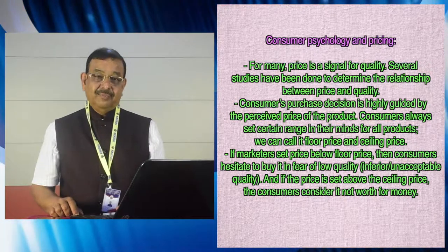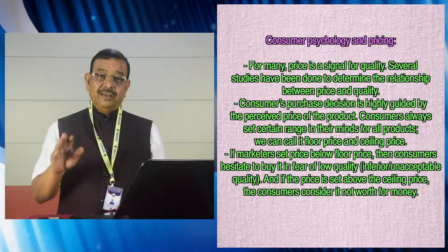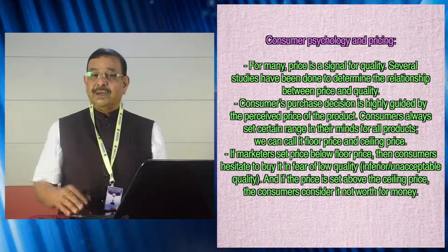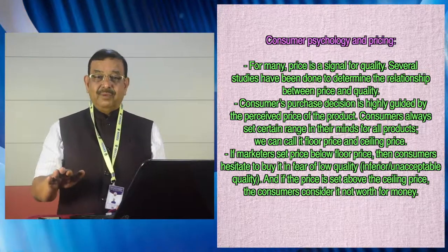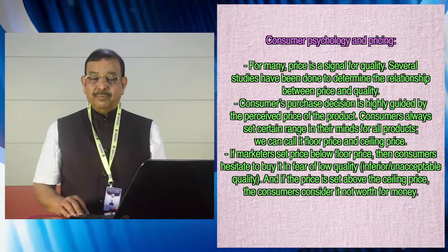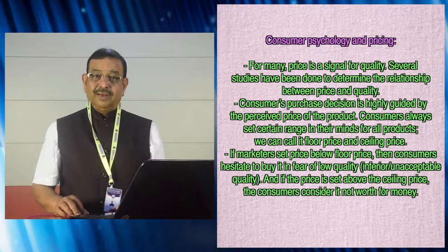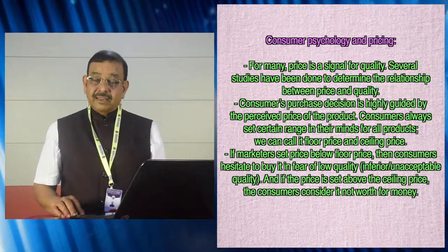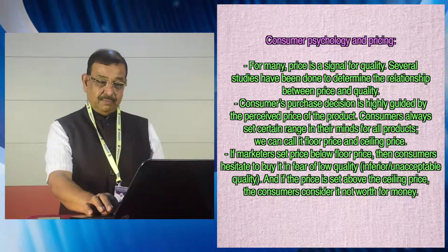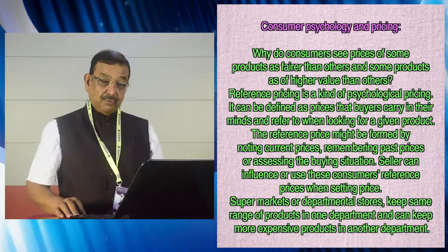If a product is priced above the ceiling price, in terms of affordability the consumer will withdraw, feeling it is beyond their means. So there is an acceptable price range between floor and ceiling within which consumers decide what to buy. Consumers set a mental price limit — for example, deciding to buy a product somewhere between ₹500 and ₹700, and being willing to pay ₹510 or ₹690 depending on circumstances. These psychological aspects significantly influence pricing decisions.